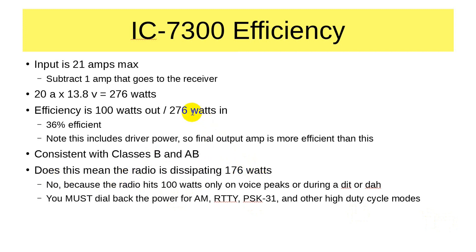Does this mean the radio is dissipating the other 176 watts as heat? No, because the radio only hits 100 watts on voice peaks or during a dit or dah on Morse. If you use a high duty cycle mode, you must dial back the power. For AM, dial back to 25 watts. For RTTY, no more than 50 watts. PSK 31 is a digital mode and you want to drop that back to about 30 watts to keep the amplifier extremely linear. For FT8, which transmits for only 15 seconds at a time, you can dial up a bit more, though it is not recommended as FT8 is a low power mode.